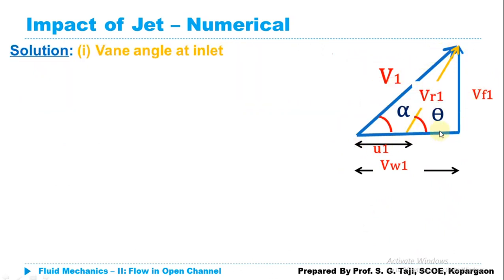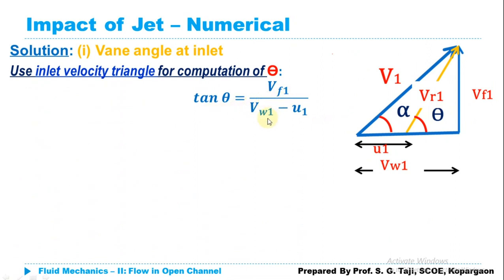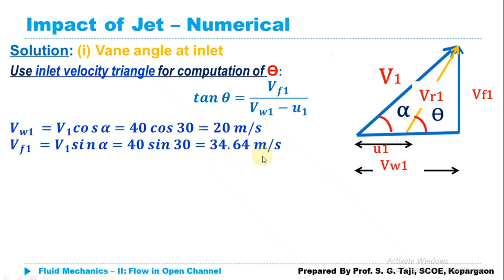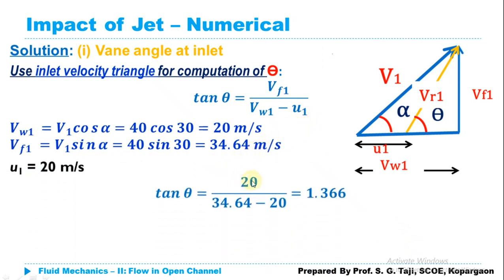Using the inlet velocity triangle: Vw1 = V1·cos(α) = 40·cos(30°) = 34.64 m/s; Vf1 = V1·sin(α) = 40·sin(30°) = 20 m/s. Therefore, tan(θ) = 20 / (34.64 − 20) = 20 / 14.64 = 1.366. So θ = tan⁻¹(1.366) = 53.8°. Now we proceed to compute phi using the outlet velocity triangle.